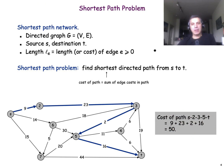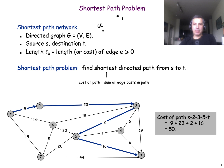So here is the problem we're trying to solve. We're given a graph. It may be either directed, as you see here, or it may be undirected. Obviously, if it is undirected, you can turn it into directed by replacing every undirected edge with two directed edges. The other thing you're given is, for every edge, a length or a cost of that edge, which is non-negative.